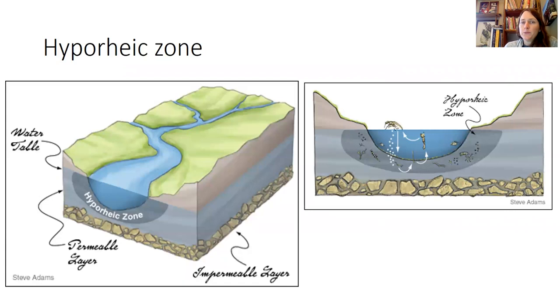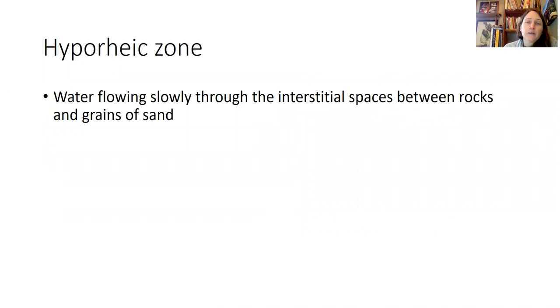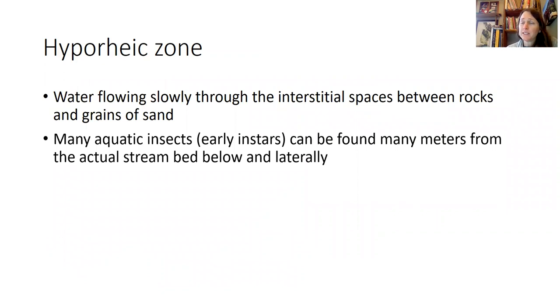What do we know about the hyporheic zone? The hyporheic zone is this saturated zone of flowing water. You just can't see it because it's underground. It's basically saturated gravel that resides underneath the water and provides really important habitat for early instars of aquatic insects. This water flows much slower, going through interstitial spaces between rocks and grains of sand, and it flows up and down into the river channel providing cool water to streams, kind of refrigerating them over time. If you dig down into the stream sediment underneath streams you can find lots and lots of aquatic insects in their early forms.